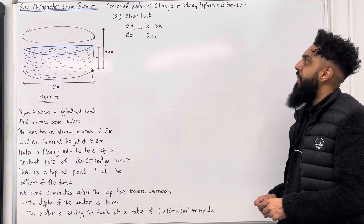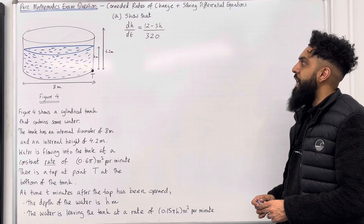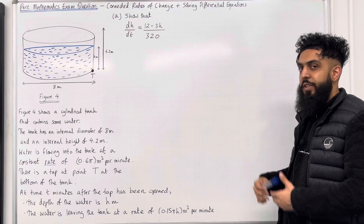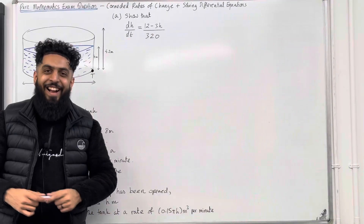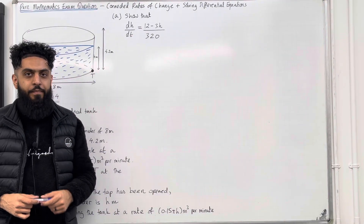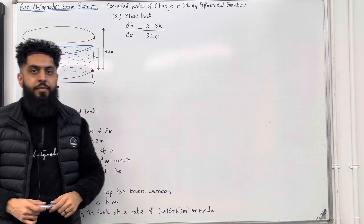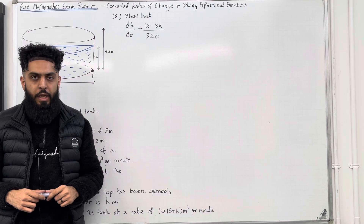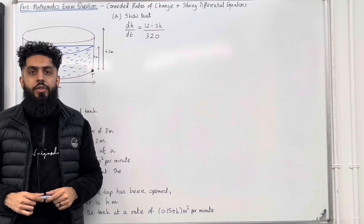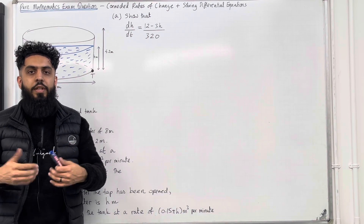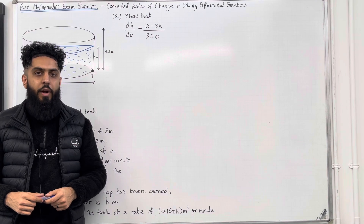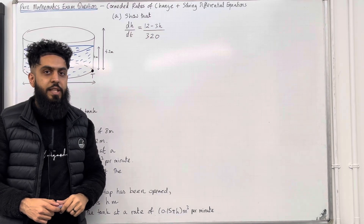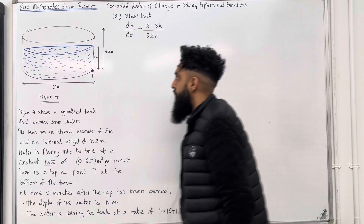Part A: show that dh/dt is equal to (12 − 3h)/320. Please pause the video and have a go at Part A. Once you've got your complete solution, then play the video. Part A is a connected rates of change question. My top tip is to generate more than one differential. Once you've generated more than one differential, your next step is to connect them in order to arrive at the differential you want — in this scenario, dh/dt.